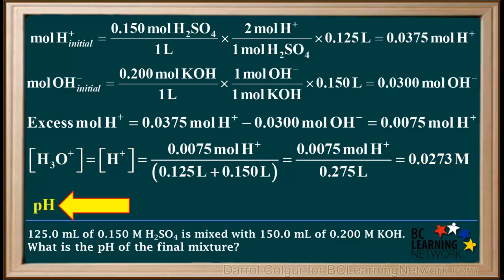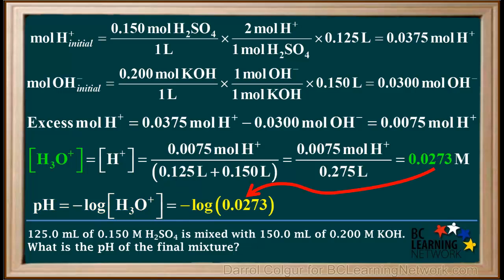In the last step, we'll find the pH of the mixture. Remember pH is defined as the negative log of the hydronium ion concentration, which is the negative log of 0.0273, which comes out to 1.56. In a pH, the digits to the right of the decimal are significant. So this answer has two significant figures.